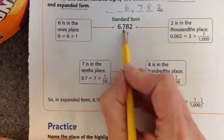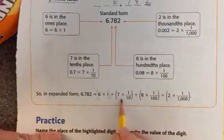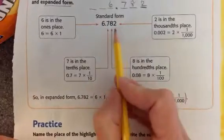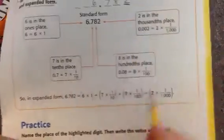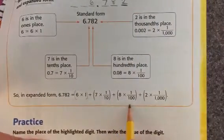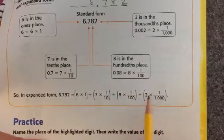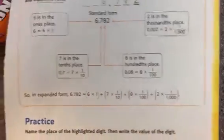so I write seven times one tenth. The eight is in the hundredths place, so I write eight times one hundredth. And the two is in the thousandths place, so I write two times one thousandth.